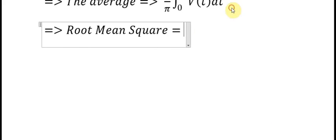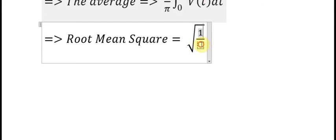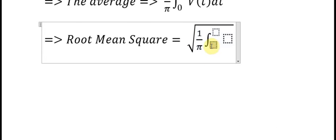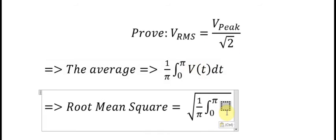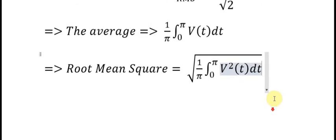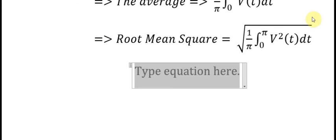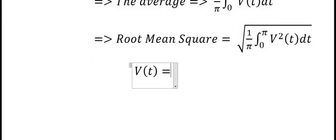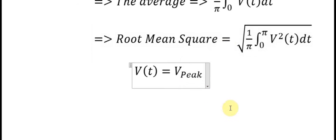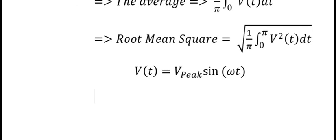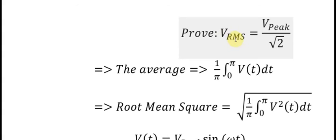The root mean square is the square root of 1 over P times the integral from zero to P of V(t) squared dt. This is the definition of the root mean square. Now we replace V(t) with our voltage expression.